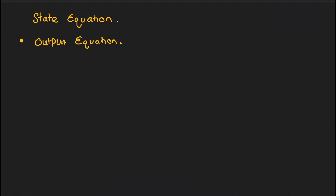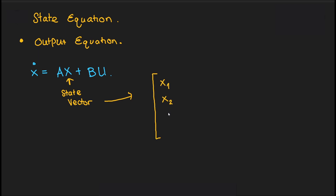Let us begin the definitions of each part of the state space representation. The symbol x represents the state vector, which is a vector containing the state variables x1, x2, all the way to xn, depending on the system. It is important to know that these state variables are chosen within the modeling of the state space representation. There are two critical rules that must be fulfilled: they must be the minimum set of linearly independent variables such that if the value of the state variables at a particular time is known, the values of all system variables for all consequent time are defined.